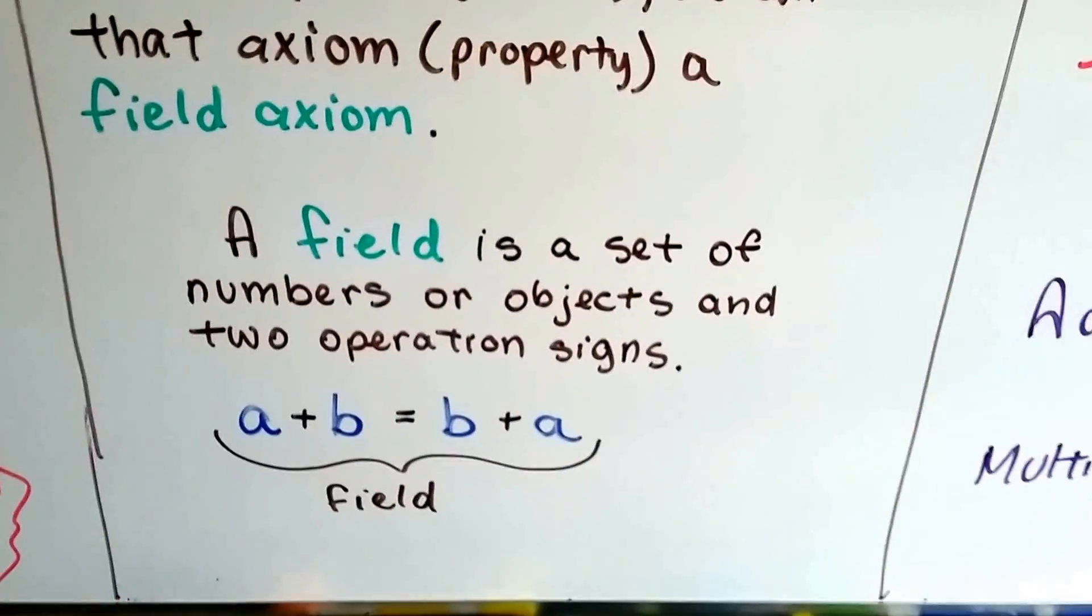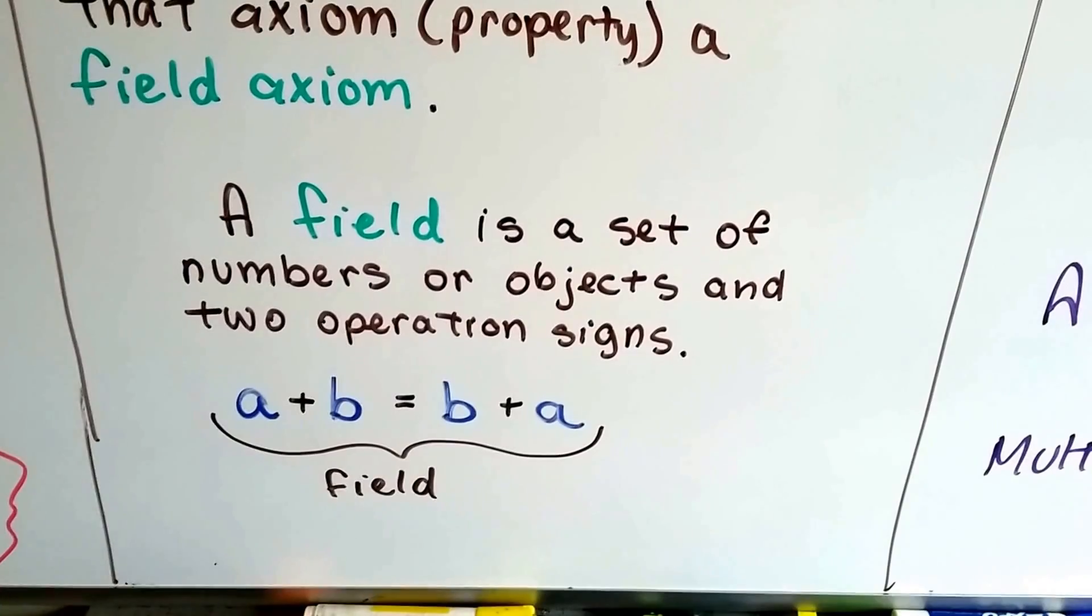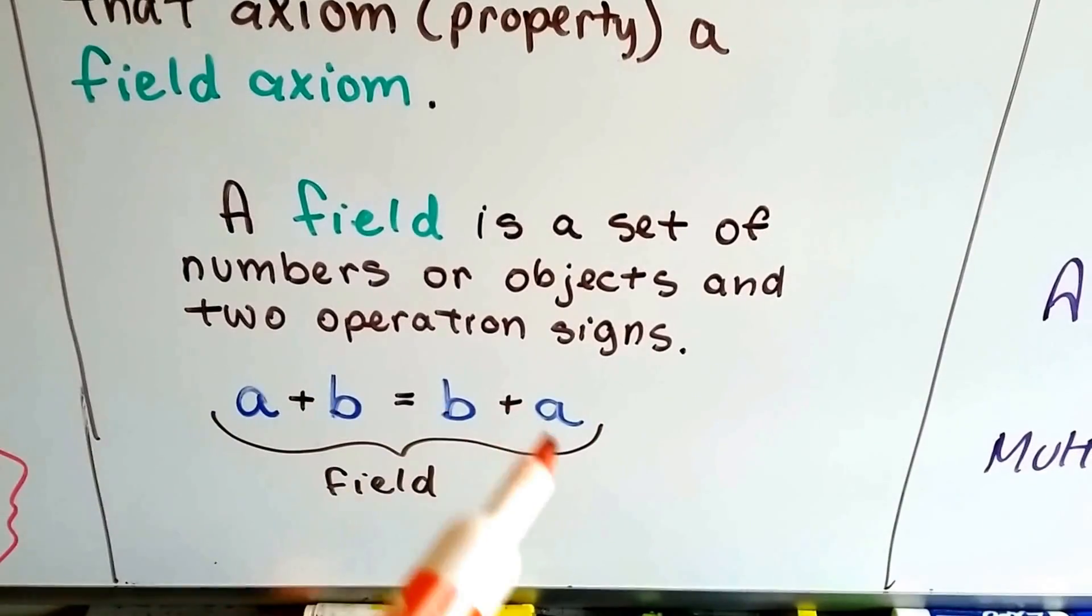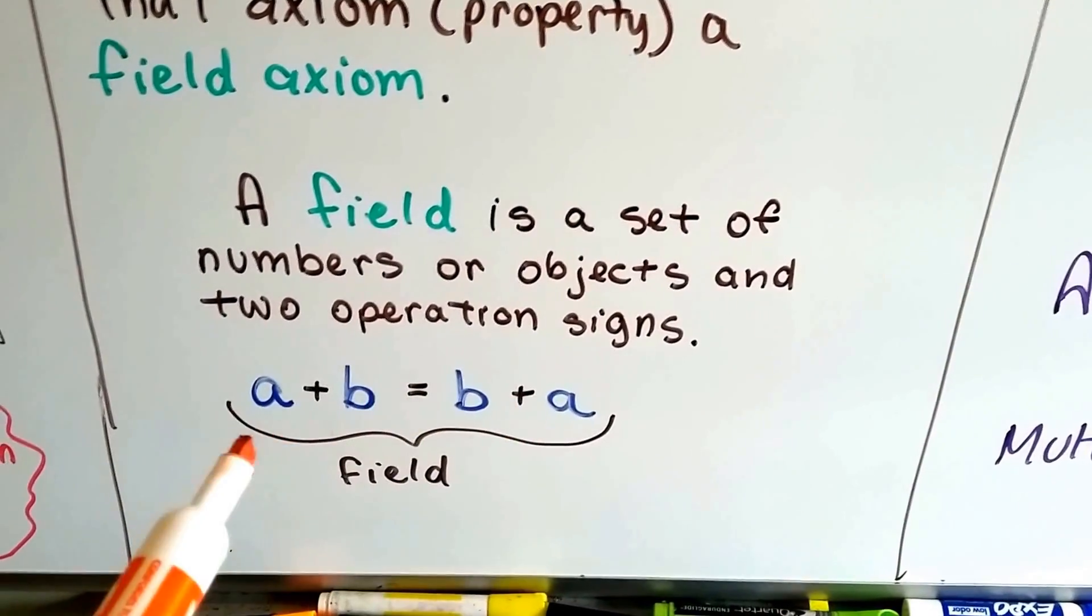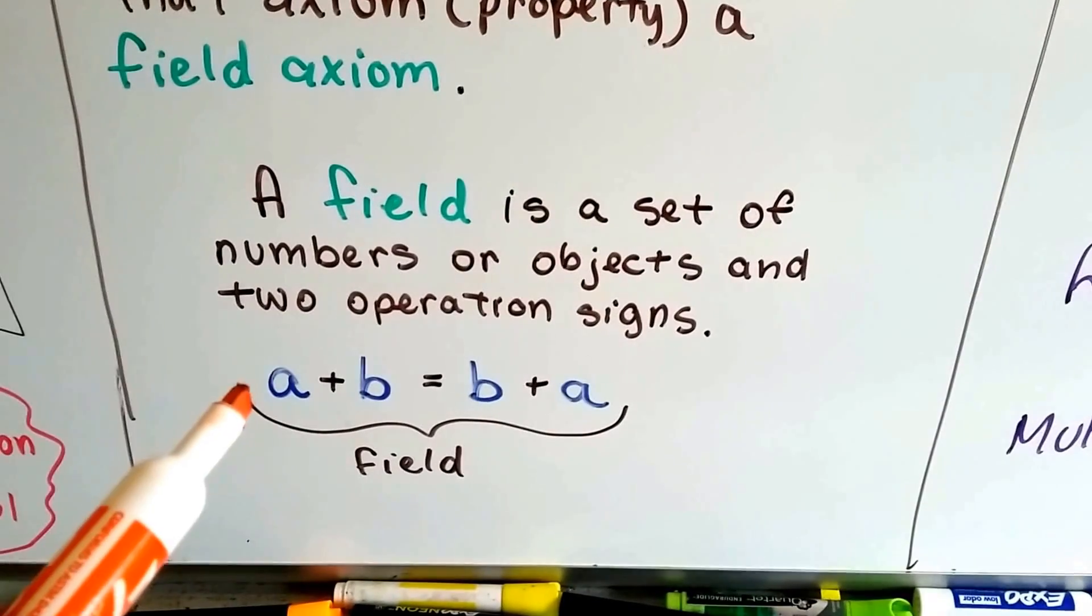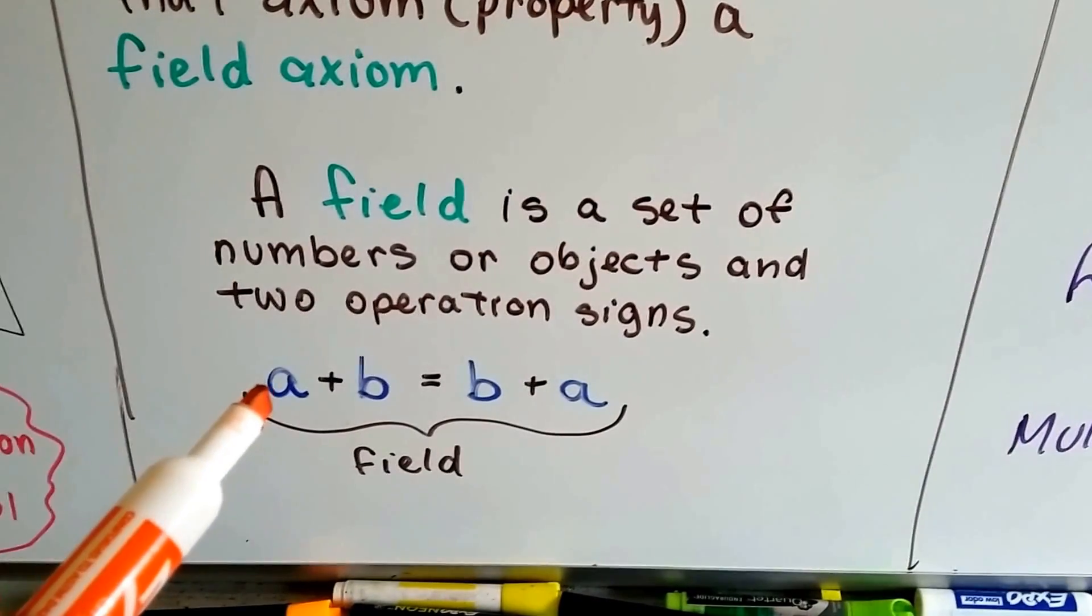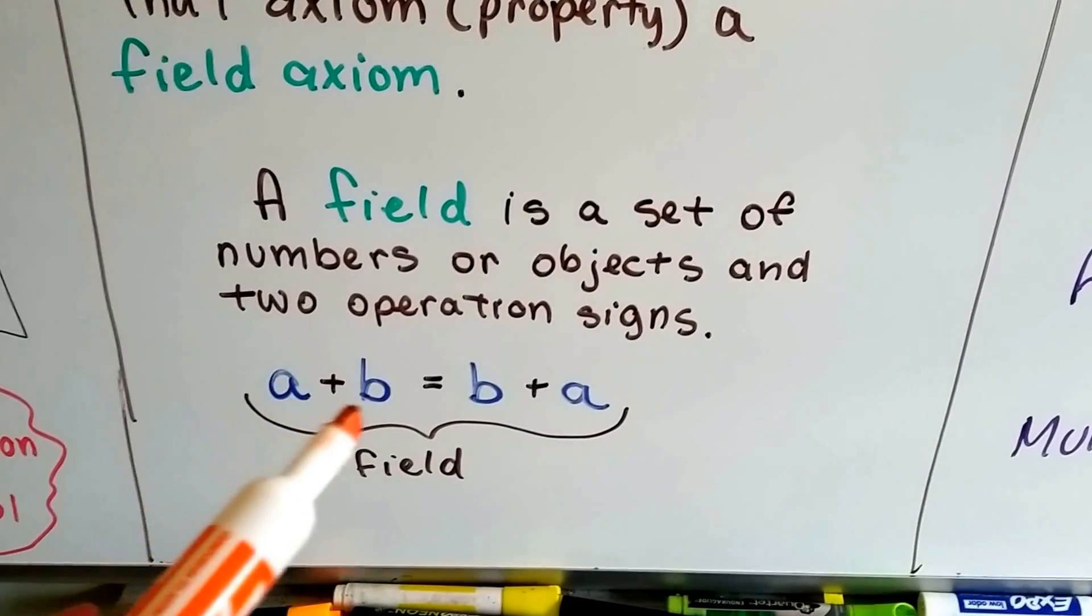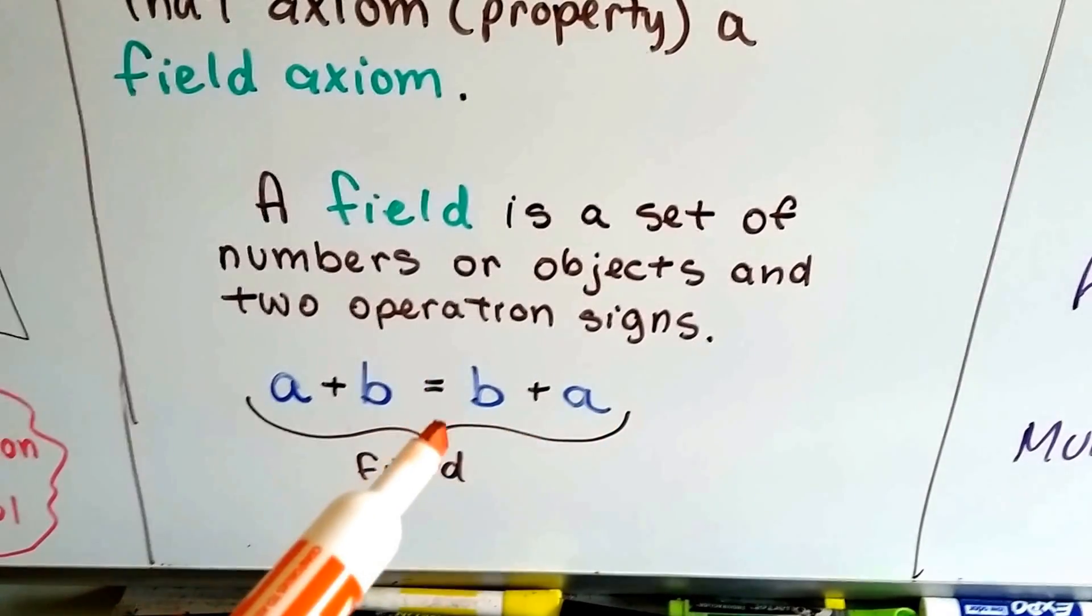A field is a set of numbers or objects and two operation signs. So this is a field. You want to know what a field is? Here's a field. That was simple, wasn't it? So this would be the commutative property, wouldn't it be? The field axiom would be a plus b equals b plus a.